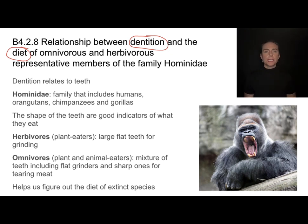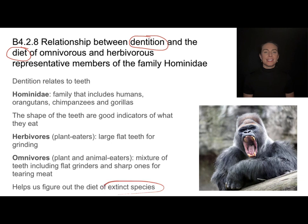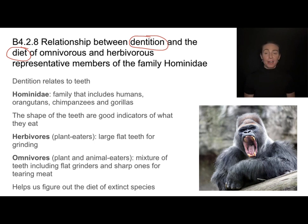You have those canines too, and they're great for catching prey and tearing meat. Understanding what type of teeth an organism has tells us a lot about its diet, and this is especially important when studying extinct species. If you've ever wondered how scientists know what different dinosaurs or Neanderthals ate, we're mostly looking at their teeth.